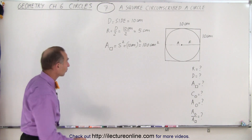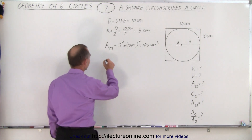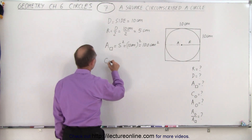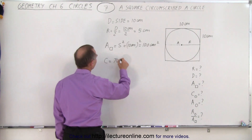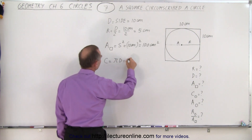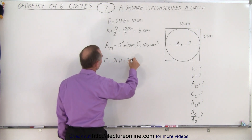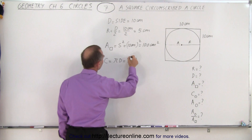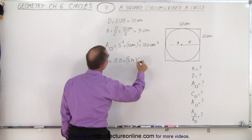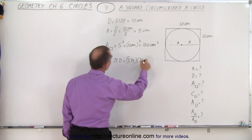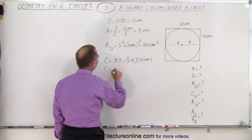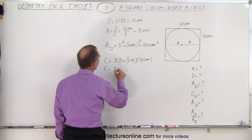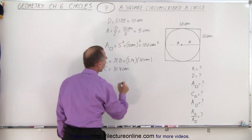Now the circumference of the circle. The circumference of the circle is equal to pi times the diameter. So in this case that would be 3.14 times the diameter of 10 centimeters, and so the circumference is equal to 31.4 centimeters.